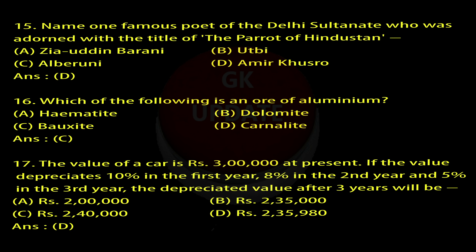Question 16: Which of the following is an ore of aluminium? A. Hematite, B. Dolomite, C. Bauxite, D. Carnallite. Answer: C.